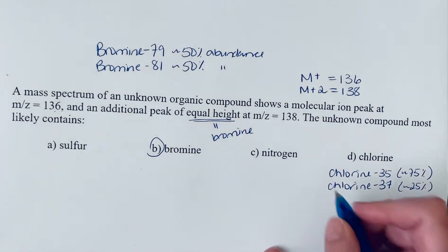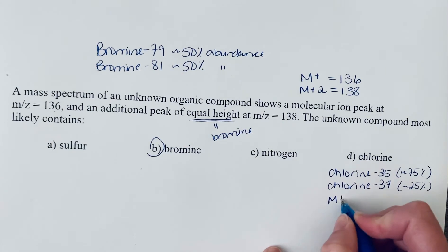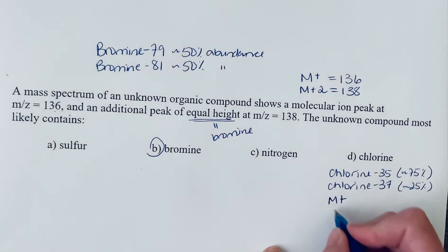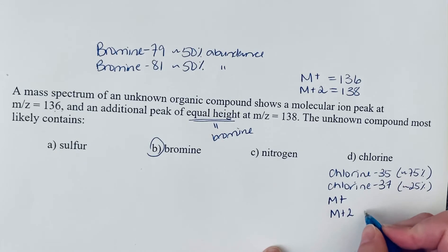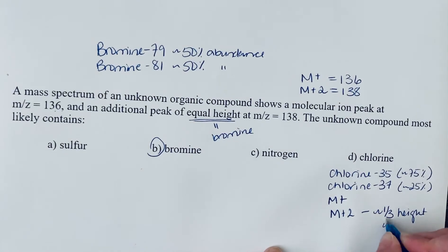The pattern we see for chlorine is an M+ peak and an M+2 peak, where the M+2 peak is approximately one-third the height of the M+ peak.